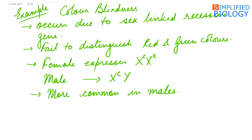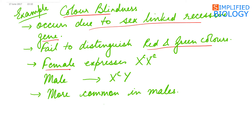Another example of sex-linked inheritance is colorblindness. This too occurs due to a sex-linked recessive gene. The person is unable to distinguish between red and green color. It expresses itself in females only when it is in the homozygous condition, as it is a recessive gene, while a single gene present in males expresses itself. Colorblindness is more common in males.